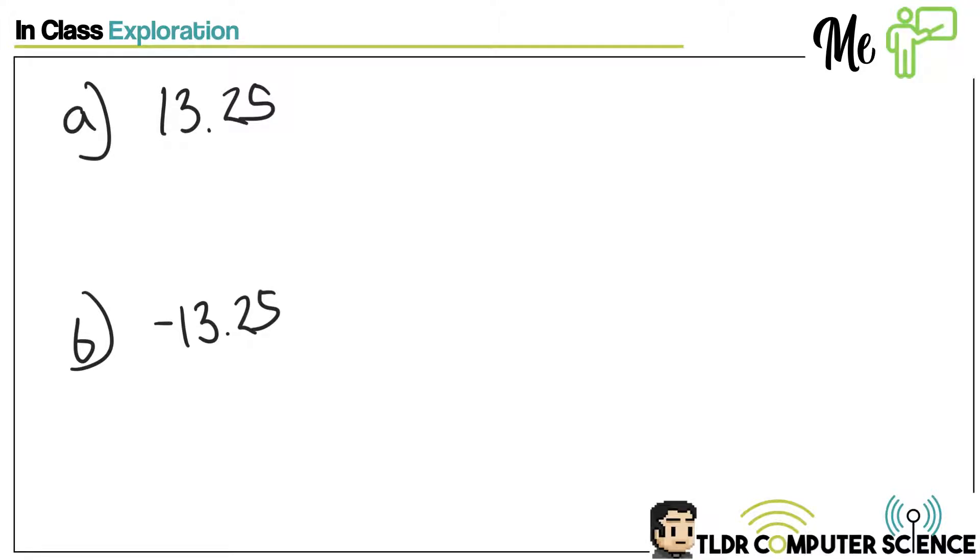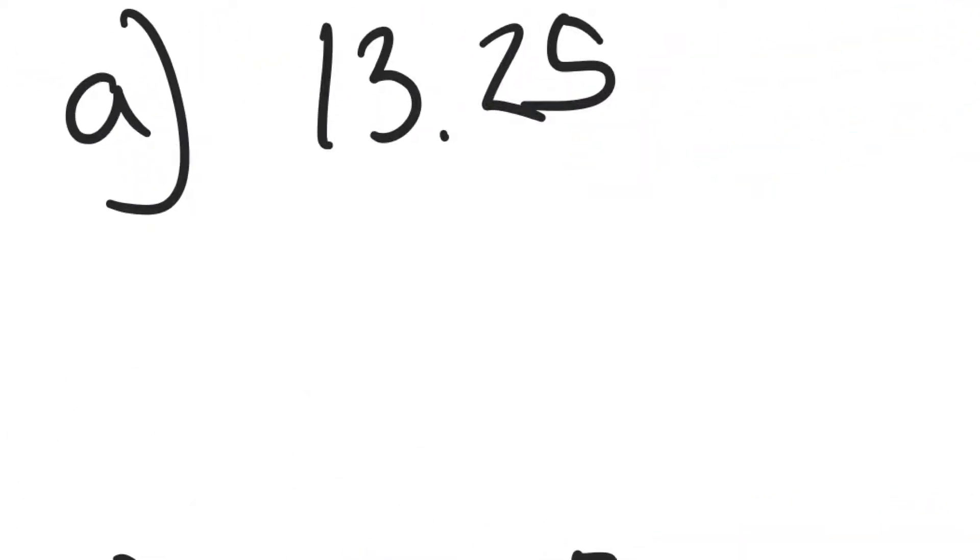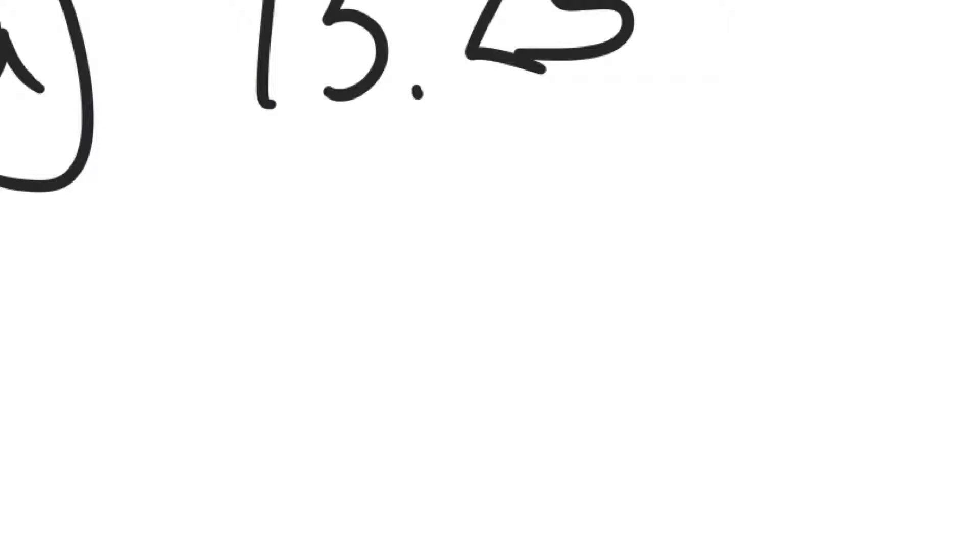So I'm taking 13.25 and negative 13.25, and I need to turn these two values into floating points. In this situation, we're going to make the assumption that they want to use the original setup of an 8-bit mantissa and a 4-bit exponent. Make the assumption always that these will be in two's complement unless they specify there isn't. Stage number one is that we need to convert 13.25 into fixed-point binary.